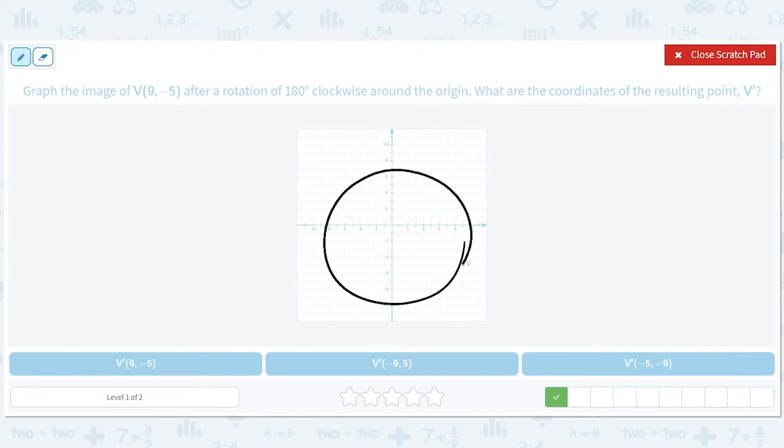So clockwise in this case is going with the clock. So we're going this way. We get to 180 degrees. We're over here. So again, it's opposite. If we'd gone counterclockwise, we'd get to the same thing, but that's only for 180.